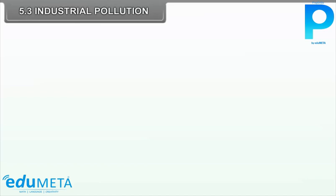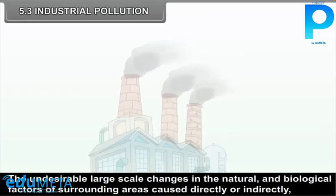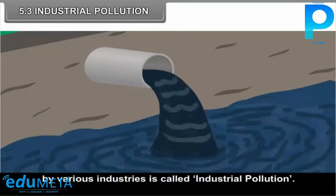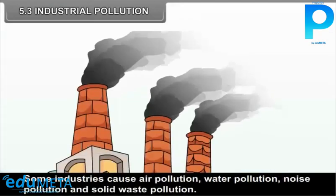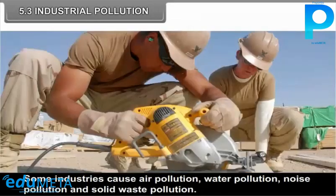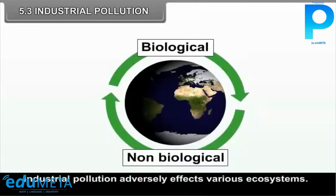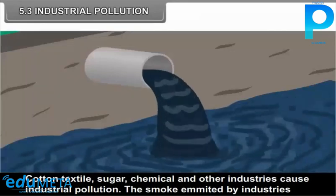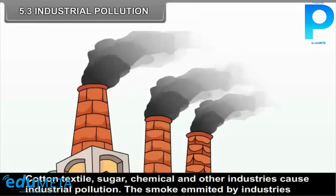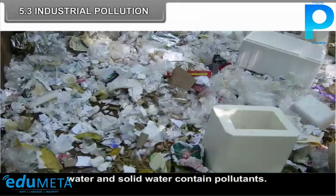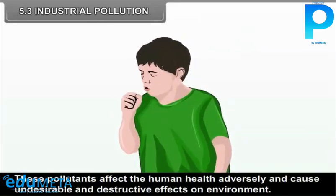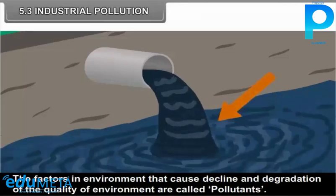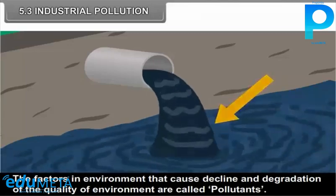The undesirable large-scale changes in the natural and biological factors of the surrounding areas caused directly or indirectly by various industries is called industrial pollution. Some industries cause air pollution, water pollution, noise pollution and solid waste pollution. Industrial pollution adversely affects various ecosystems. Cotton textile, sugar, chemical and other industries cause industrial pollution. The smoke emitted by industries, water and solid waste contain pollutants, which affect human health adversely and cause undesirable and destructive effects on the environment. The factors in the environment that cause decline and degradation of the quality of environment are called pollutants.